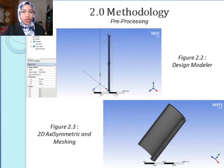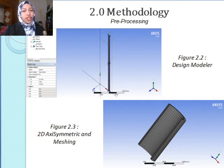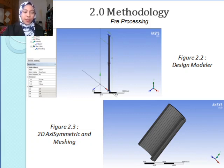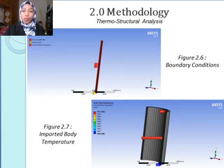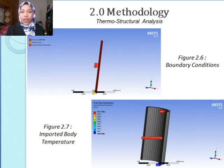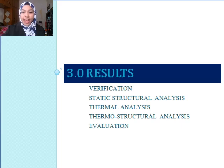Figure 2.2 shows the design modeler, in which a rectangle was constructed. Figure 2.3 shows a half-hollow cylinder, which is used from the 2D axisymmetric meshing of element size 1 mm. Figure 2.4 shows the static structural analysis boundaries. Figure 2.5 shows the thermal analysis boundaries. Figures 2.6 and 2.7 show the boundary conditions when doing a thermostructural analysis.